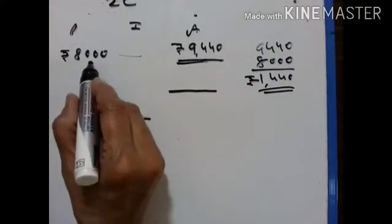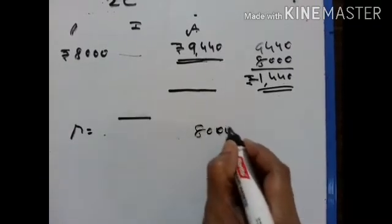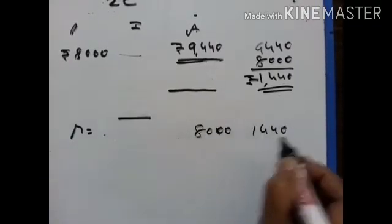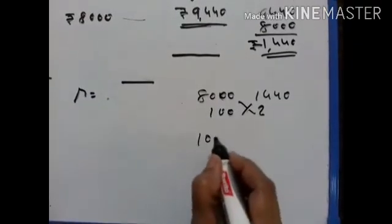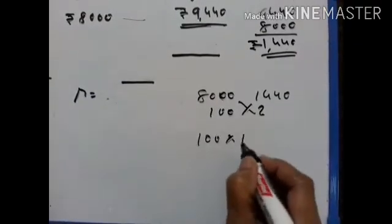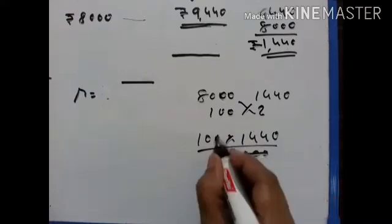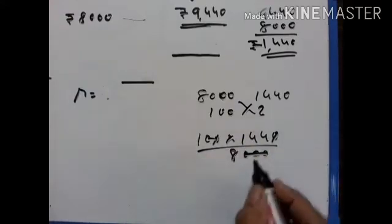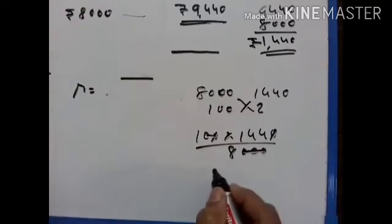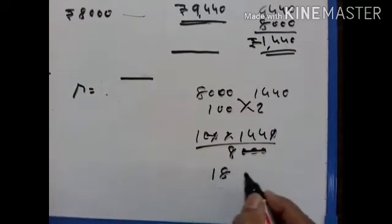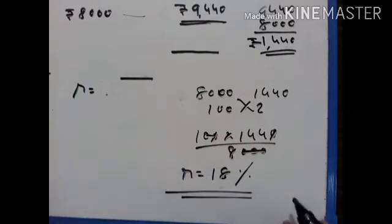That is the interest on Rs. 8000. For Rs. 8000, the interest is equal to Rs. 1440. For Rs. 100, how much? Rs. 100 into Rs. 1440 divided by Rs. 8000. Rs. 144 divided by 8 is equal to Rs. 18. So rate is equal to 18% per annum.